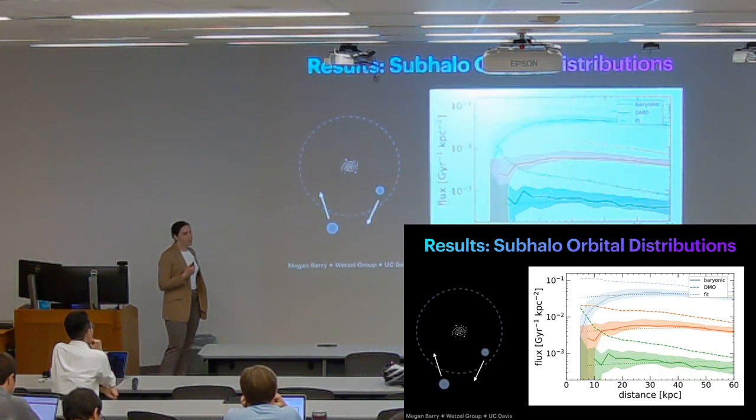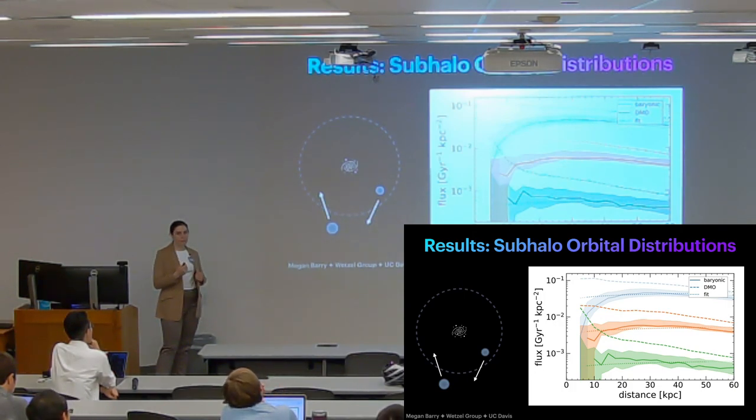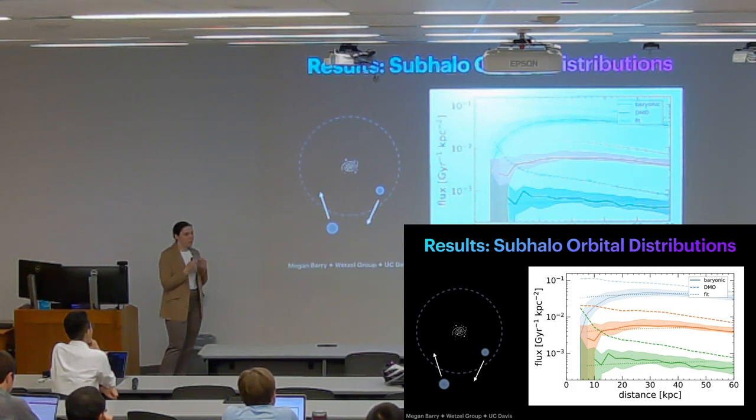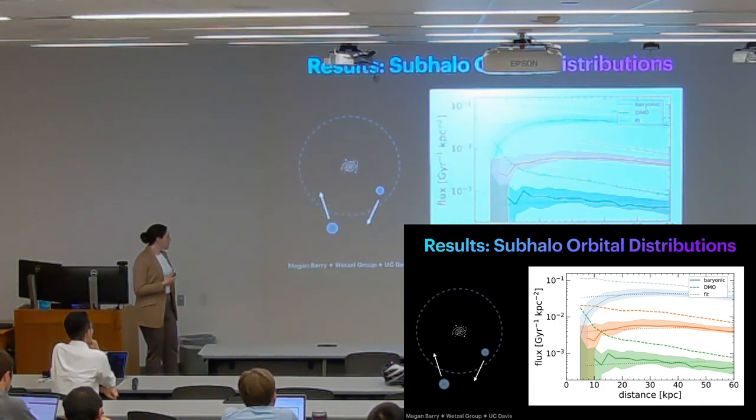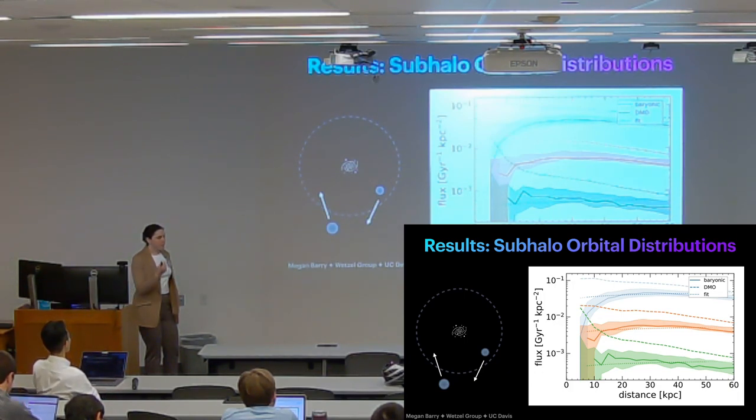One more population metric that we show is the flux rate. So this is kind of a quirky metric, but you'll see why we use it as it relates to stellar streams. So when I say flux, what we did is count how many subhalos passed either into or out of that spherical shell at that distance and calculate a rate of subhalos passing in per giga year per square kiloparsec.